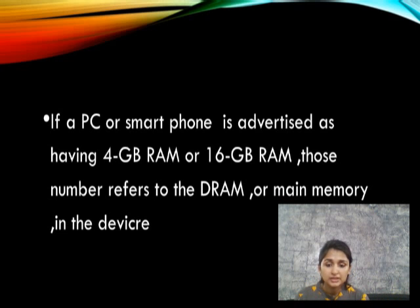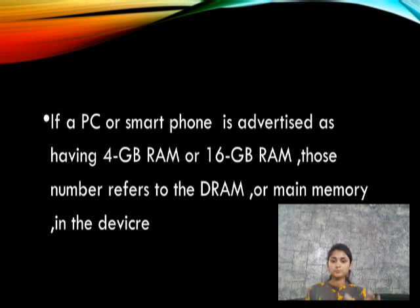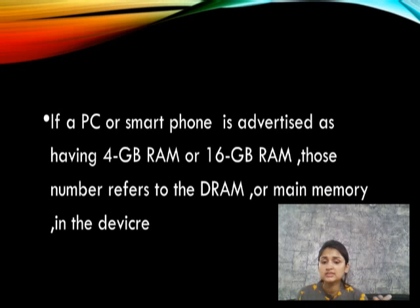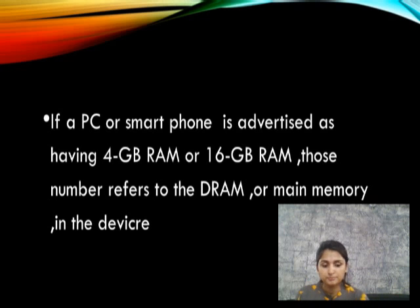Dynamic RAM is the main memory of the device and affects the speed of the system. That is why it is required to have more GB of RAM — for example, 6GB RAM is better than 4GB RAM because 6GB RAM has more speed compared to 4GB RAM.